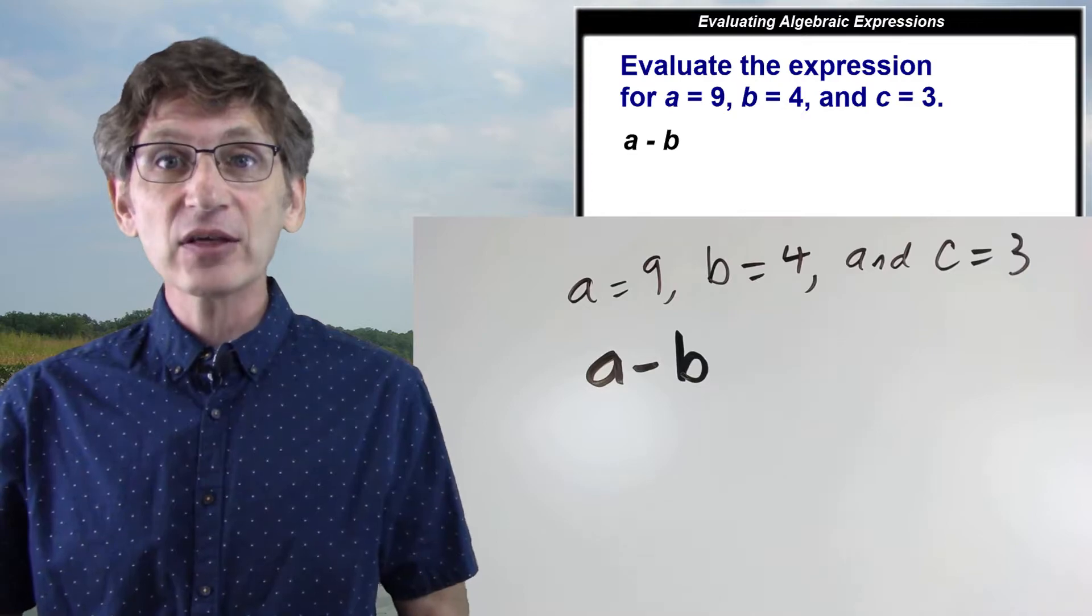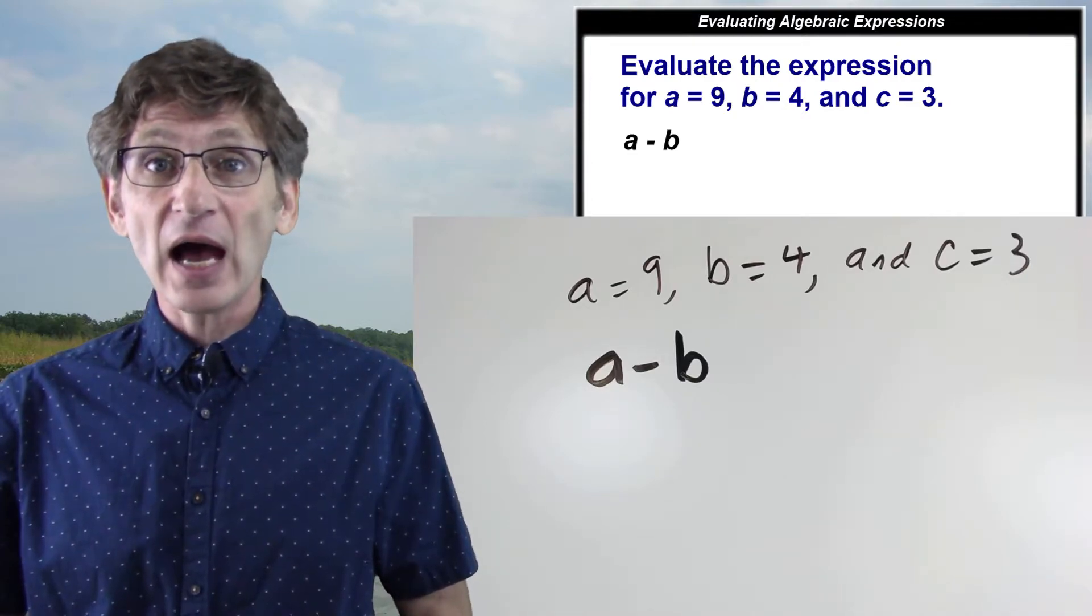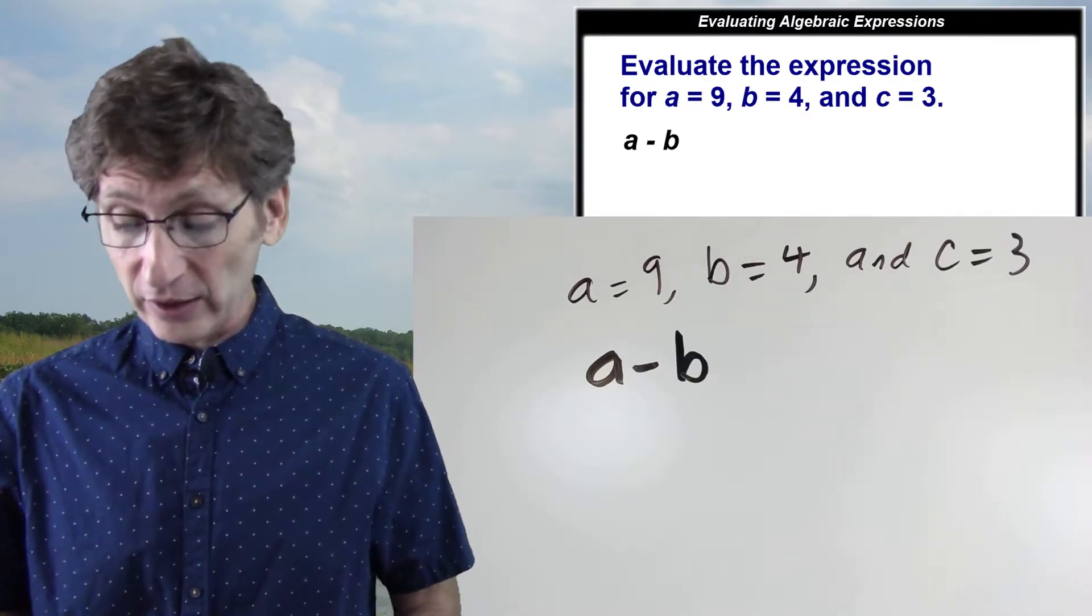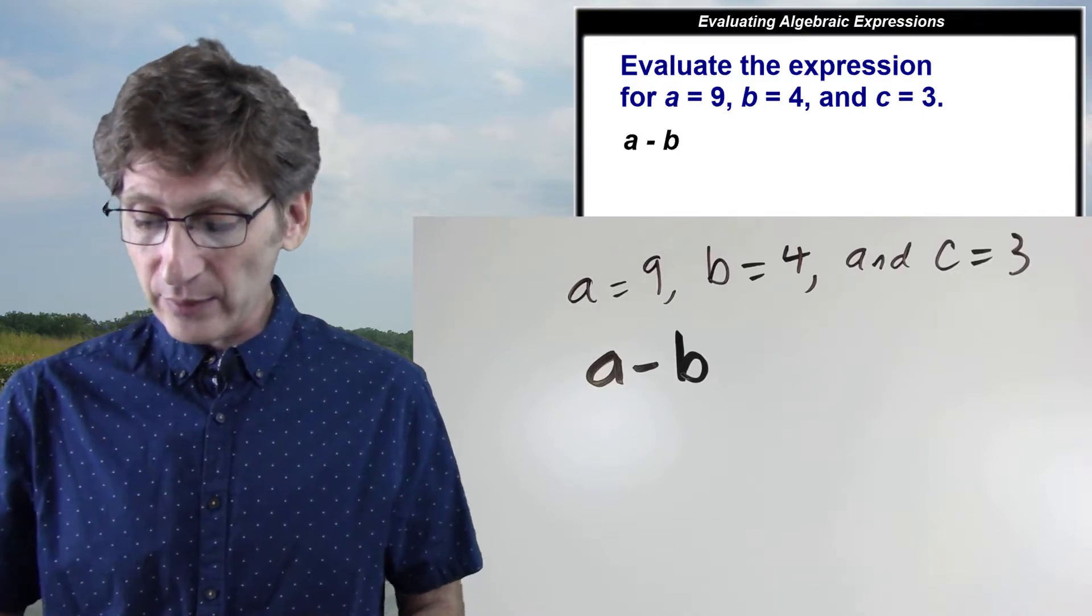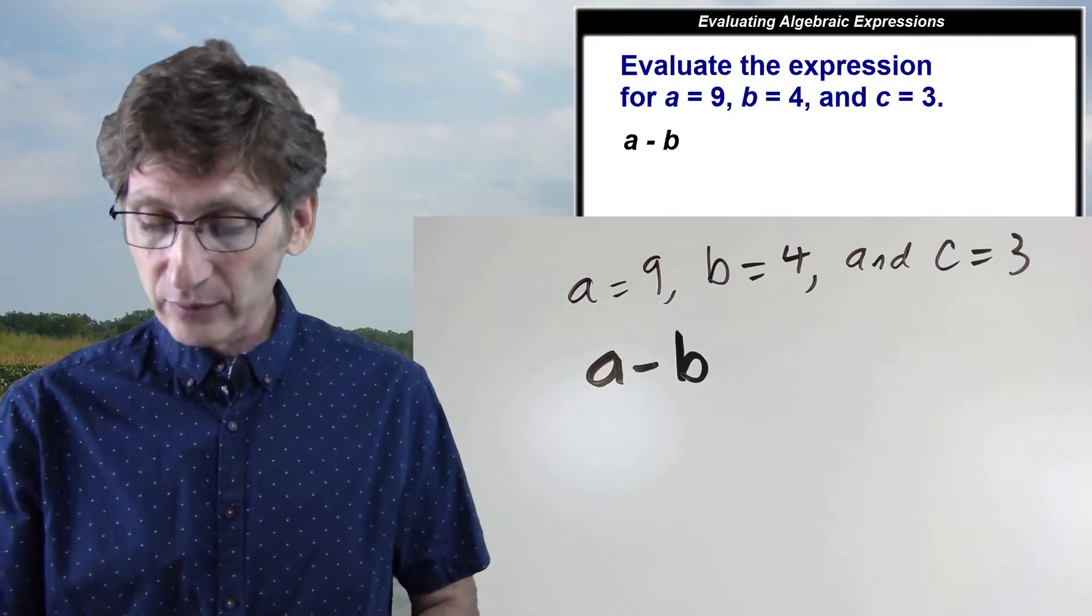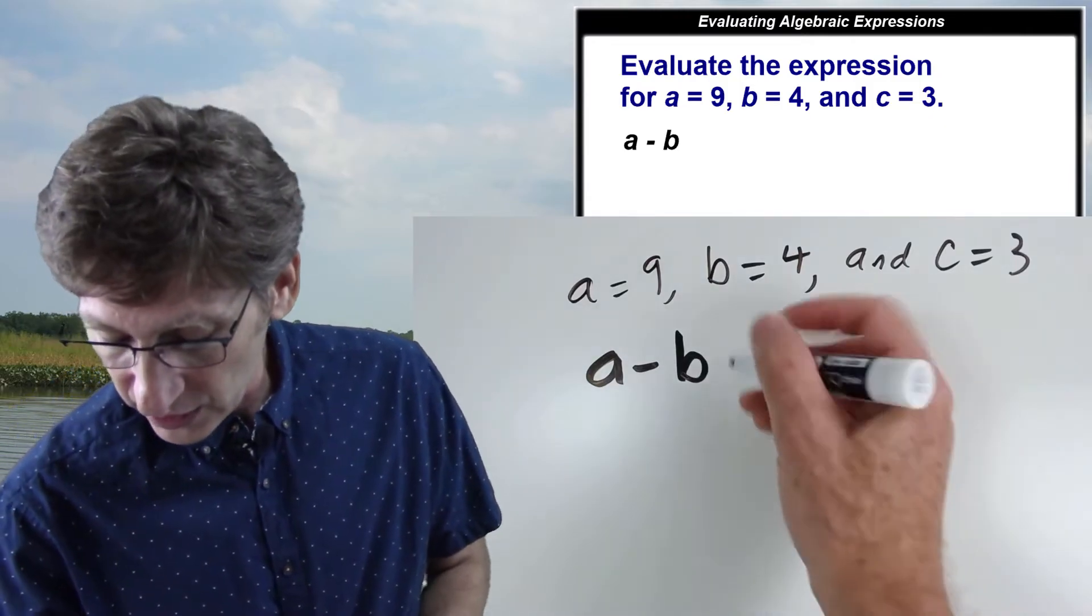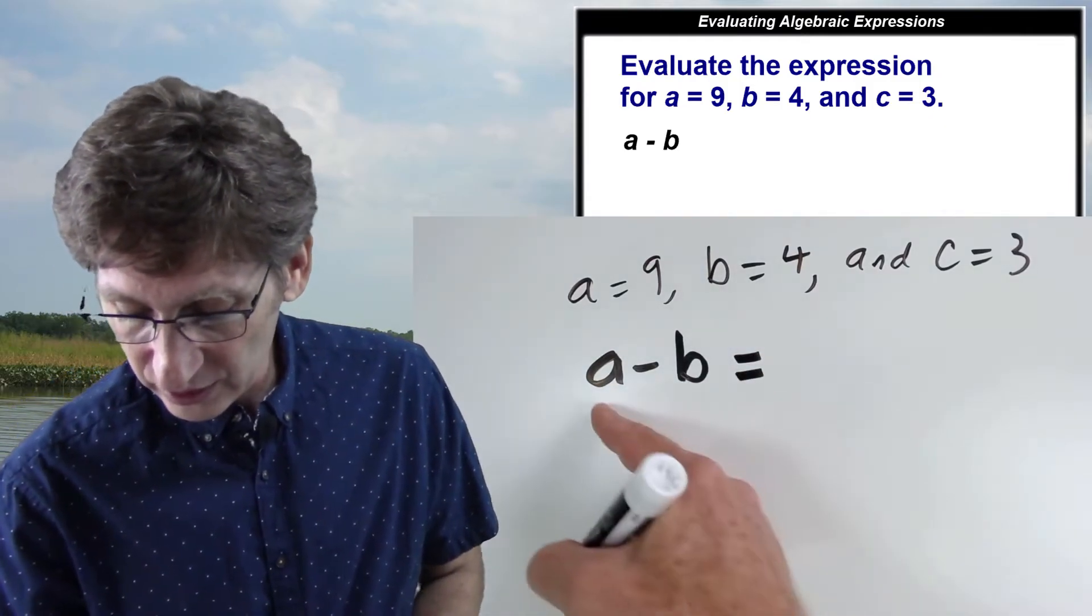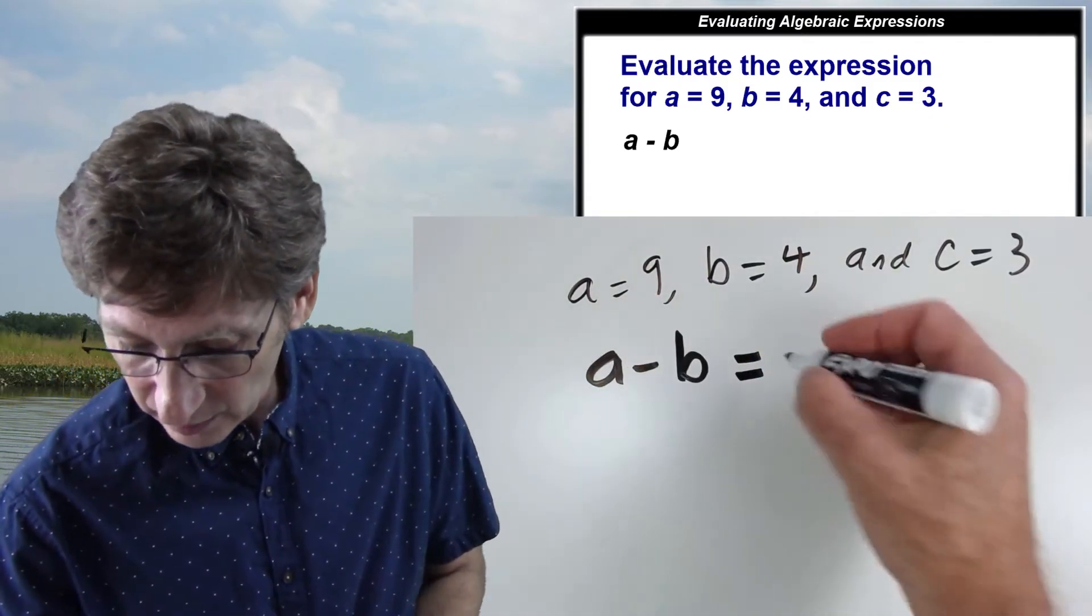Now that I have values for these variables I can compute a numerical value for this expression. So a minus b—well, a we see is 9 and b is 4. So I simply replace the values of those variables with the values I'm given.